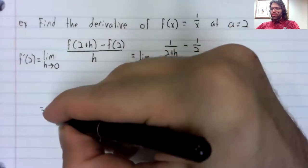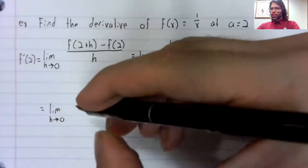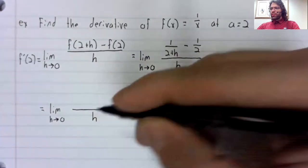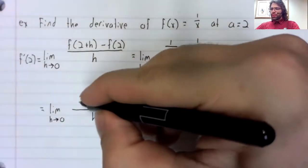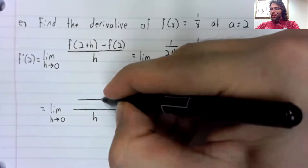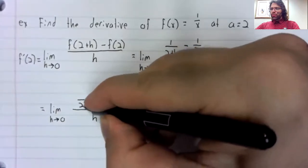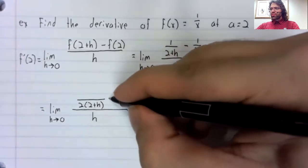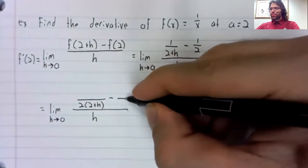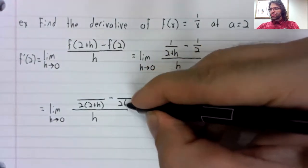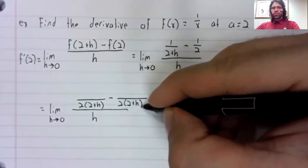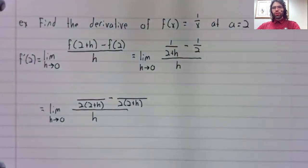We have subtraction in the numerator. We could do that subtraction if we wanted to. Albeit, to do the subtraction, we do need a common denominator.